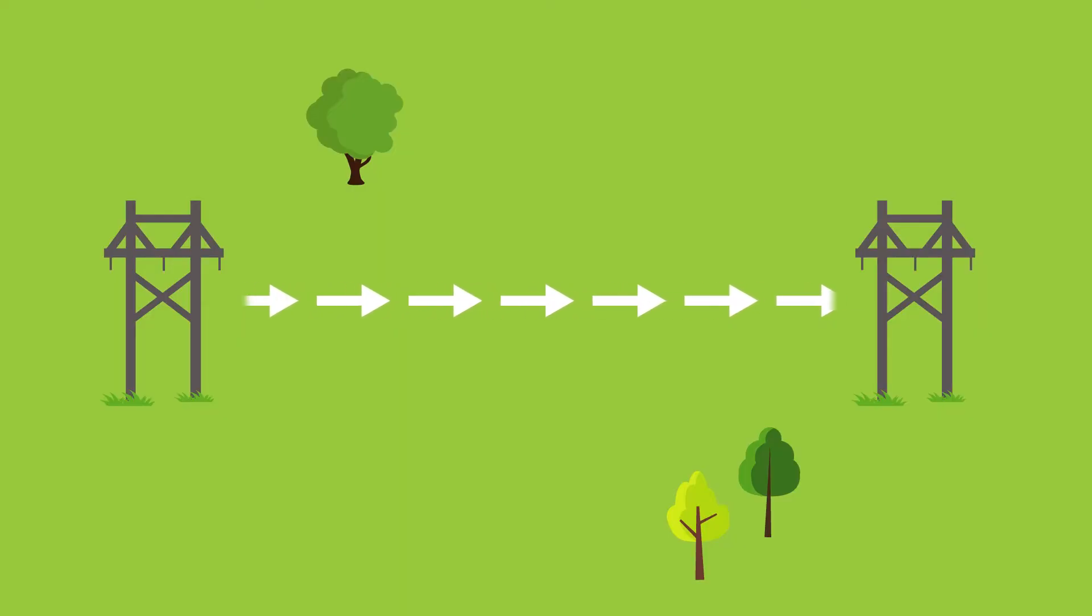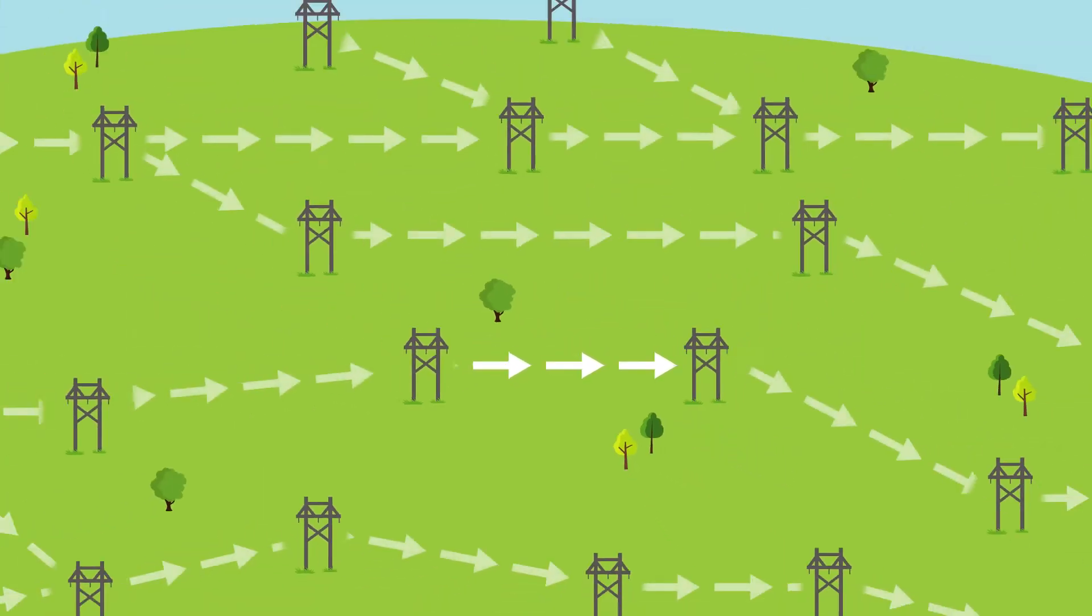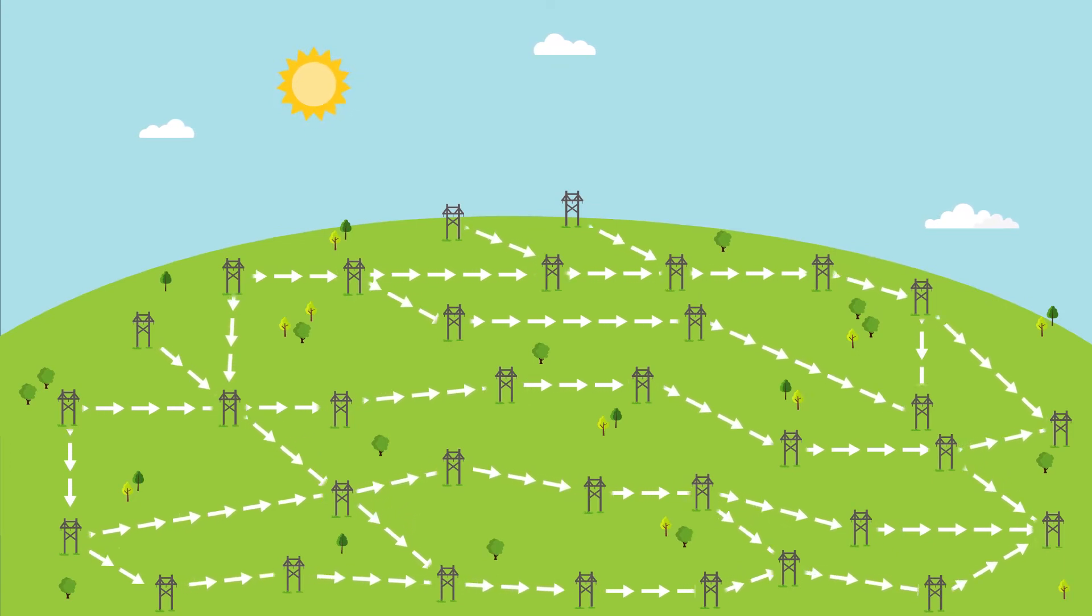Phase angles measure the amount of power flowing between two points on the grid. Imagine the grid on a hot, summer day. As power consumption rises, power is transferred across the system. As power transfer increases, phase angles will spread apart, signaling more stress on the grid.